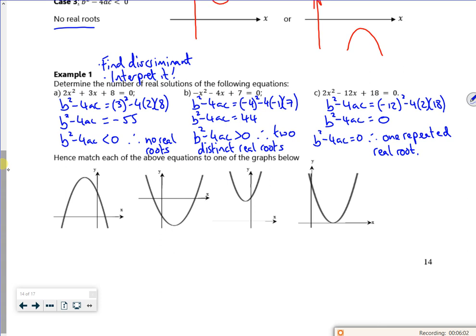Hence match each of the above equations to one of the graphs below. Right, so what have we got then? So definitely the no real roots has to be the third one along. So that's got to be 2x squared plus 3x plus 8. Right then, the one repeated root has to be 2x squared minus 12x plus 18. So then I've got the other two to choose between now. So the only one I've not chosen is the one with two distinct real roots, which is this. And if you look, it's got a minus there. It's minus x squared. So it's going to be an n of the shape. Yeah, there we go. That's all right, isn't it?